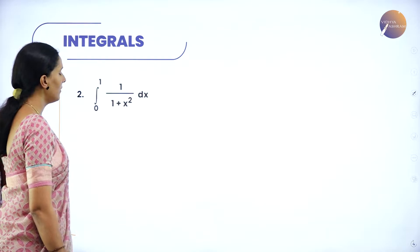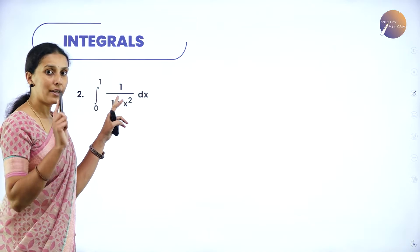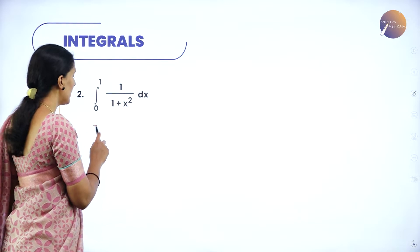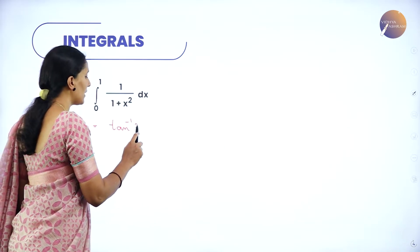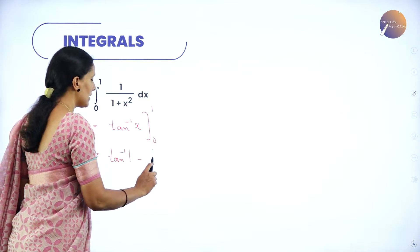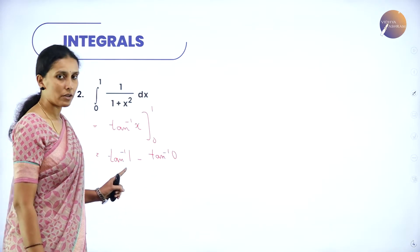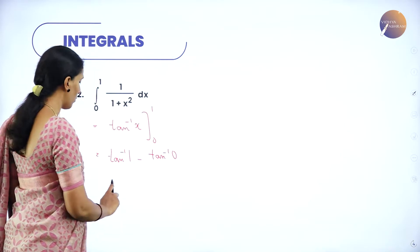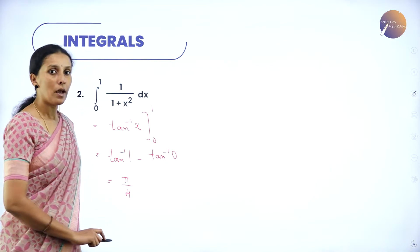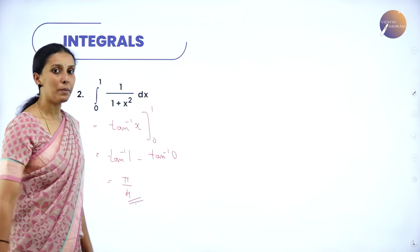Problem 2: Integral from 0 to 1 of 1/(1 + x²) dx. We know that 1/(1 + x²) is the derivative of tan⁻¹(x). Hence the integral is tan⁻¹(x). Applying the limits from 0 to 1: tan⁻¹(1) − tan⁻¹(0). Tan⁻¹(1) is π/4, and tan⁻¹(0) is 0, so π/4 − 0 = π/4.